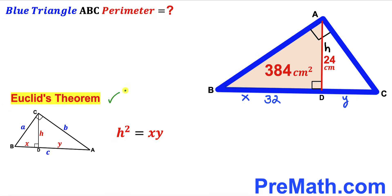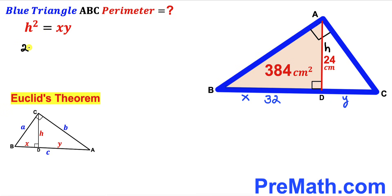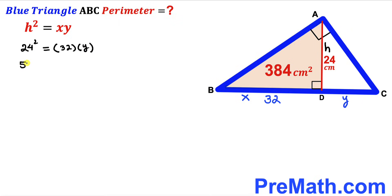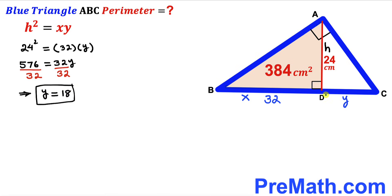We are going to apply Euclid's theorem to our problem. Our height h is 24 and x is 32, and we need to find y. Filling in the formula: 24² = 32 × y, so 576 = 32y. Dividing both sides by 32, our y value turns out to be 18 centimeters.